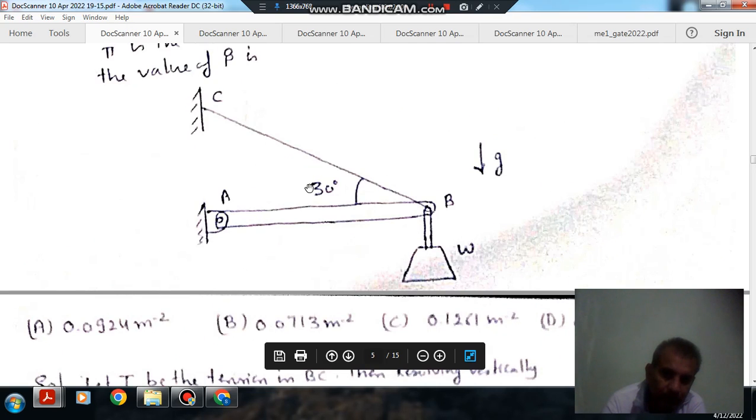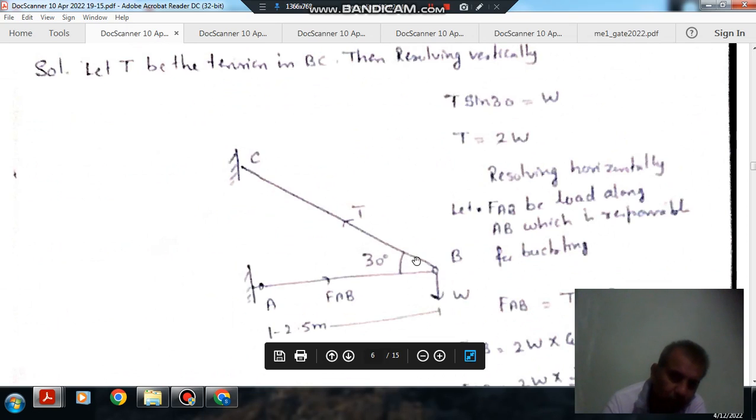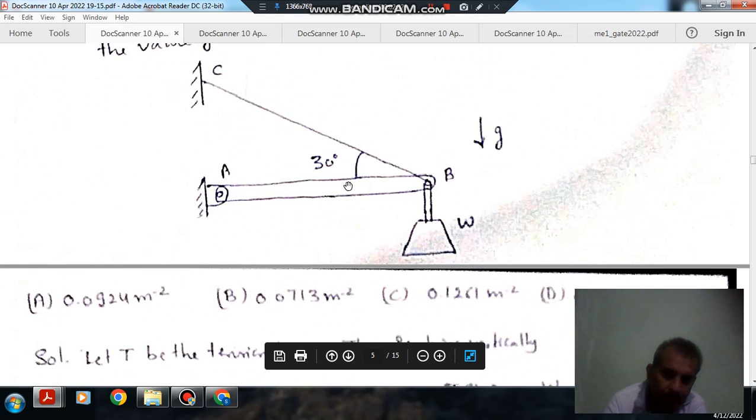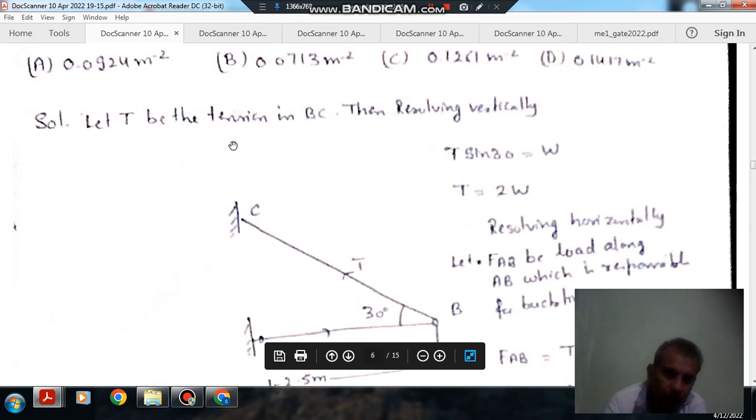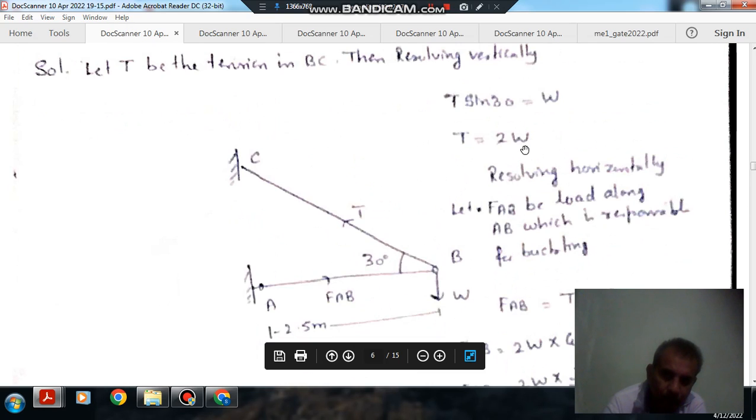So this is your load W, and it is causing tension T in a string and force FAB in this pin jointed member. If we resolve the forces vertically, then its vertical component will be T sin 30, and it is balanced by W, so T will be 2W.